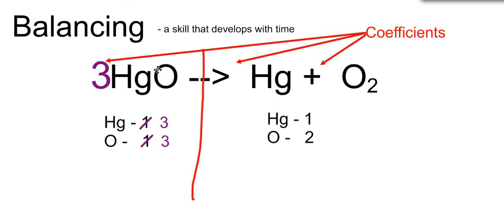But if I put that 3 in front of mercury oxide, it applies to everything behind it. So I would go from having 1 mercury and 1 oxygen to 3 mercuries and 3 oxygens, because 3 times 1 is 3. 3 times 1 is 3.